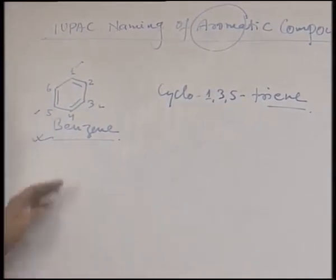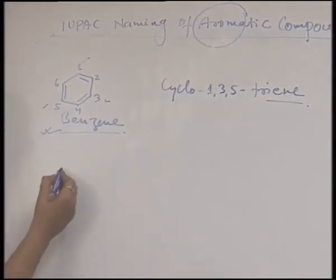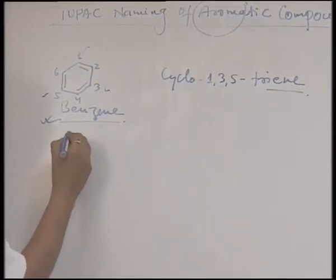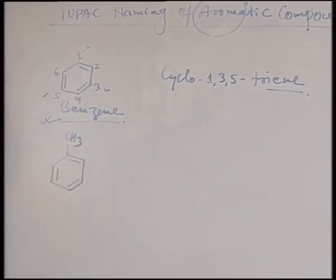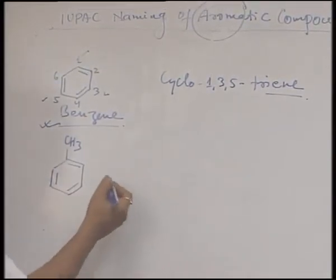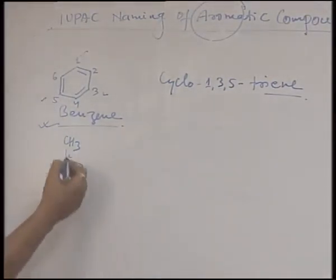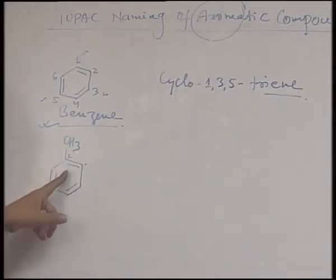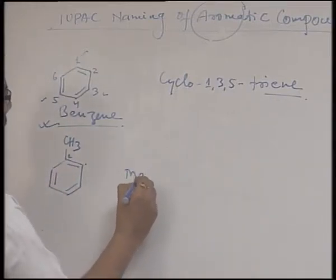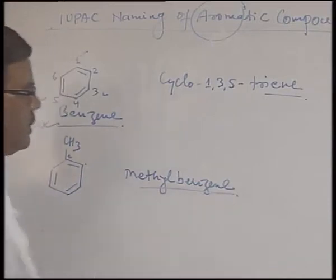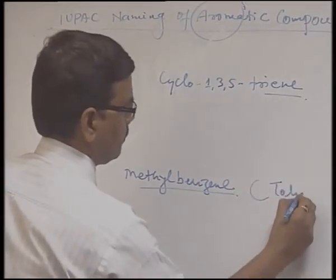Now see some common examples of aromatic compounds and their IUPAC naming. For a benzene ring with one methyl group: since the methyl group can be at any position and its number will always be 1, there is no need to write the number 1. The IUPAC name is methylbenzene. Its common name, which we must know, is toluene.